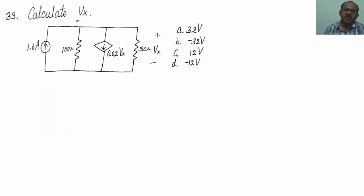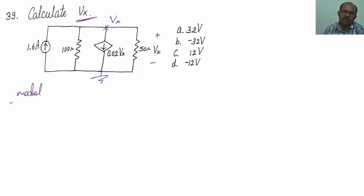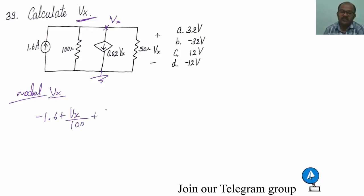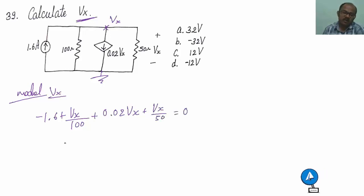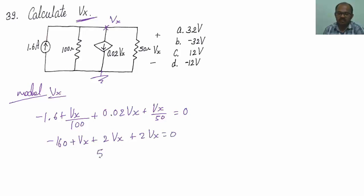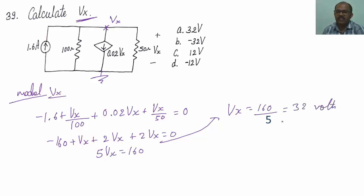In the 39th question, we have to find the value of Vx — the voltage drop across the 50 ohm resistor. I can treat this voltage as Vx and this node as ground. Applying nodal analysis at Vx, I will be getting: minus 1.6 plus Vx divided by 100 plus 0.02 times Vx plus Vx divided by 50 equals 0. Taking LCM: minus 160 plus Vx plus 2Vx plus 2Vx equals 0, so 5 times Vx equals 160, giving Vx equals 32 volts.